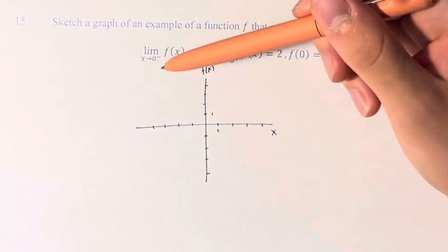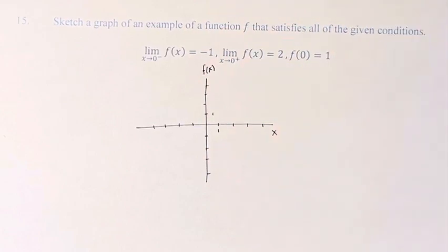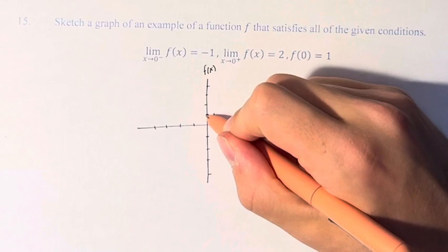So we have these two limits, which are the limits as x approaches 0 from the left and the right. So the actual value of the function at 0 is 1. So let's draw that in.